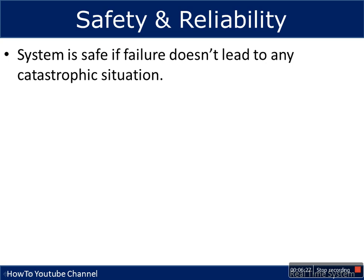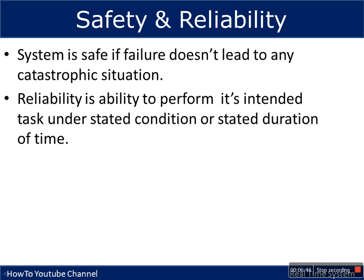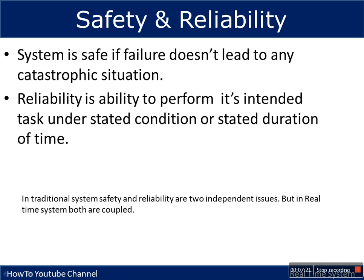Now let's discuss two important features: safety and reliability. A system is safe if a failure does not lead to any catastrophic situation. Reliability is the ability to perform its intended task under steady conditions over a given duration — for example, if a system is supposed to function for five years and it works perfectly for five years, it is considered reliable.